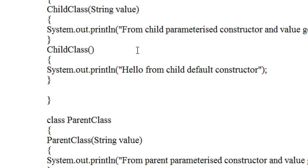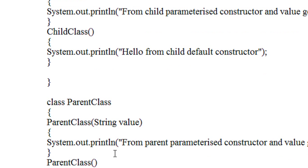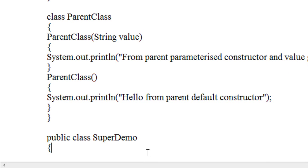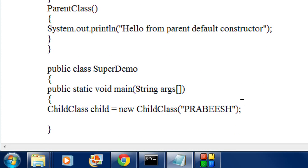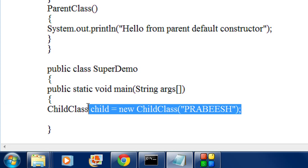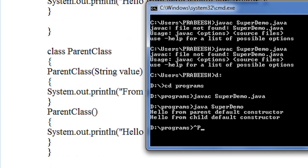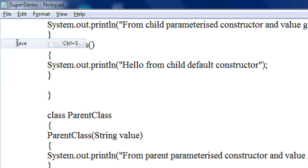In the case of a default constructor, we can see that it will invoke the parent constructor first, then the child class default constructor. But here things are quite different. In this case, the parameterized constructor of parent is not invoked by the creation of this object — it will only invoke the default constructor of parent, and then only the parameterized constructor of child.